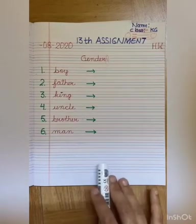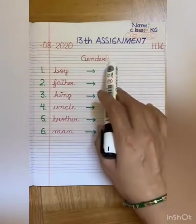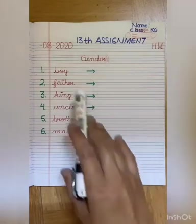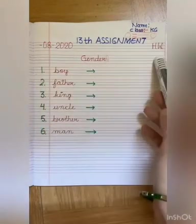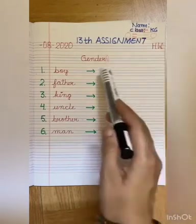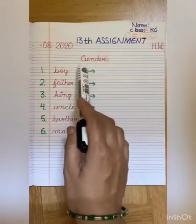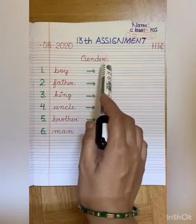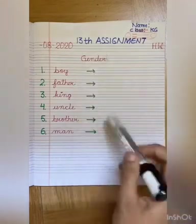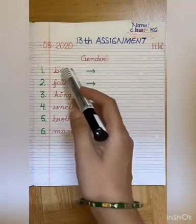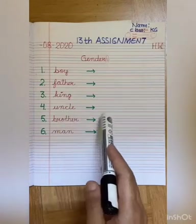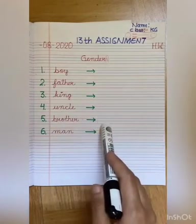I hope children you must have learned about gender. Children, first of all you will write the date and H.W., that is homework. Then write the heading: Gender — G-E-N-D-E-R. Here are a few words; what you have to do is write their opposite gender.